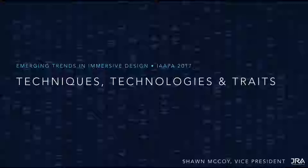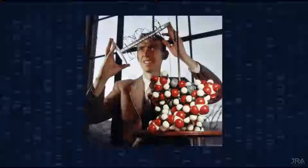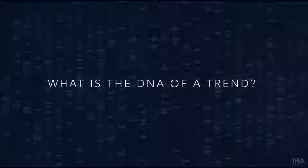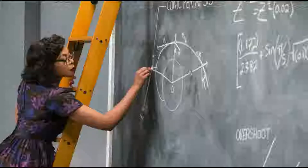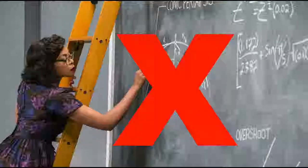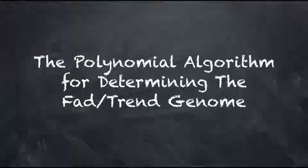Now before we begin on that theory, a few disclaimers. First of all, I'm not a geneticist, but I'm not above misusing genetic terms as a metaphor, such as: what's the DNA of a trend? Second, I'm not a mathematician, even though the first part of this presentation is based upon the following made-up, complex-sounding polynomial algorithm for determining the FAD trend genome.